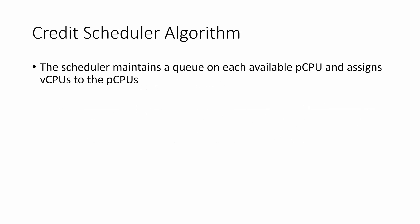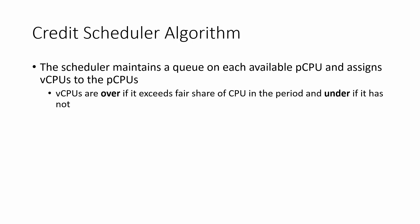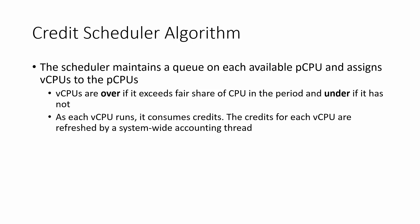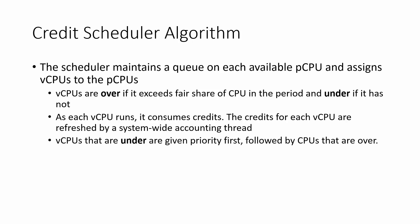The scheduler maintains a queue on each available physical CPU and assigns virtual CPUs to the physical CPUs. It classifies virtual CPUs into two types: a vCPU is 'over' if it exceeds its fair share of CPU in the period, and 'under' if it has not exceeded that fair share. As each vCPU runs it consumes credits, and the credits for each vCPU are refreshed periodically using a system-wide accounting thread. During execution, vCPUs that are 'under' are given priority first, followed by vCPUs that are 'over'.